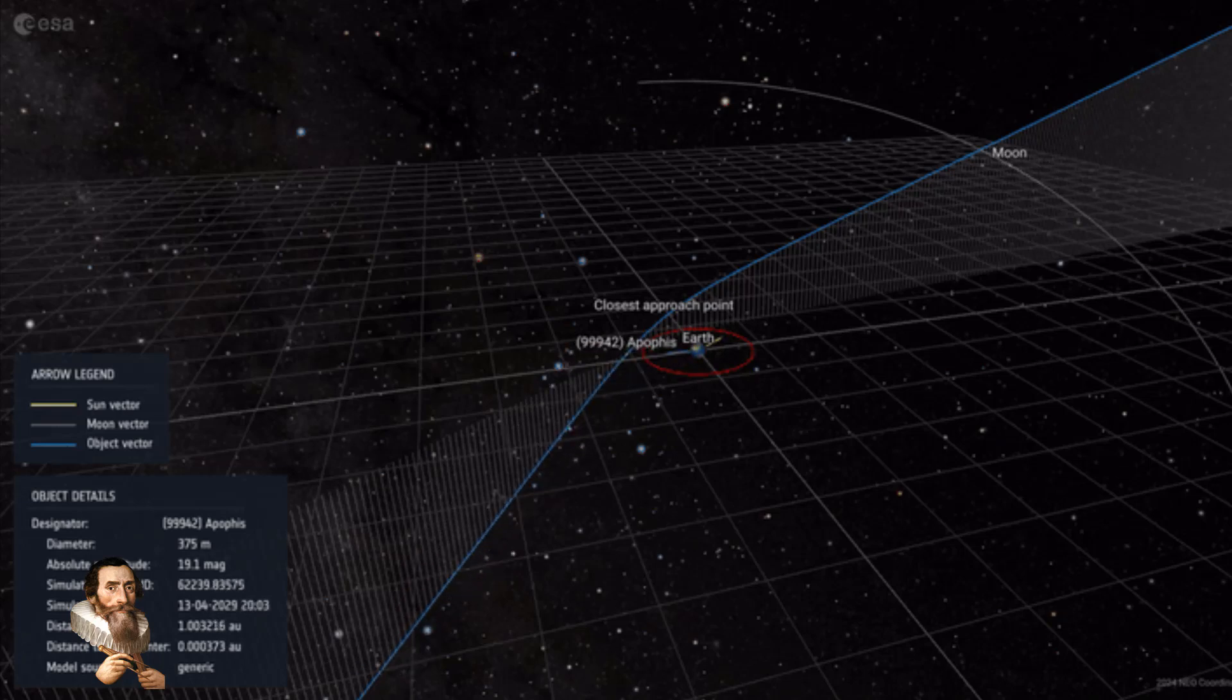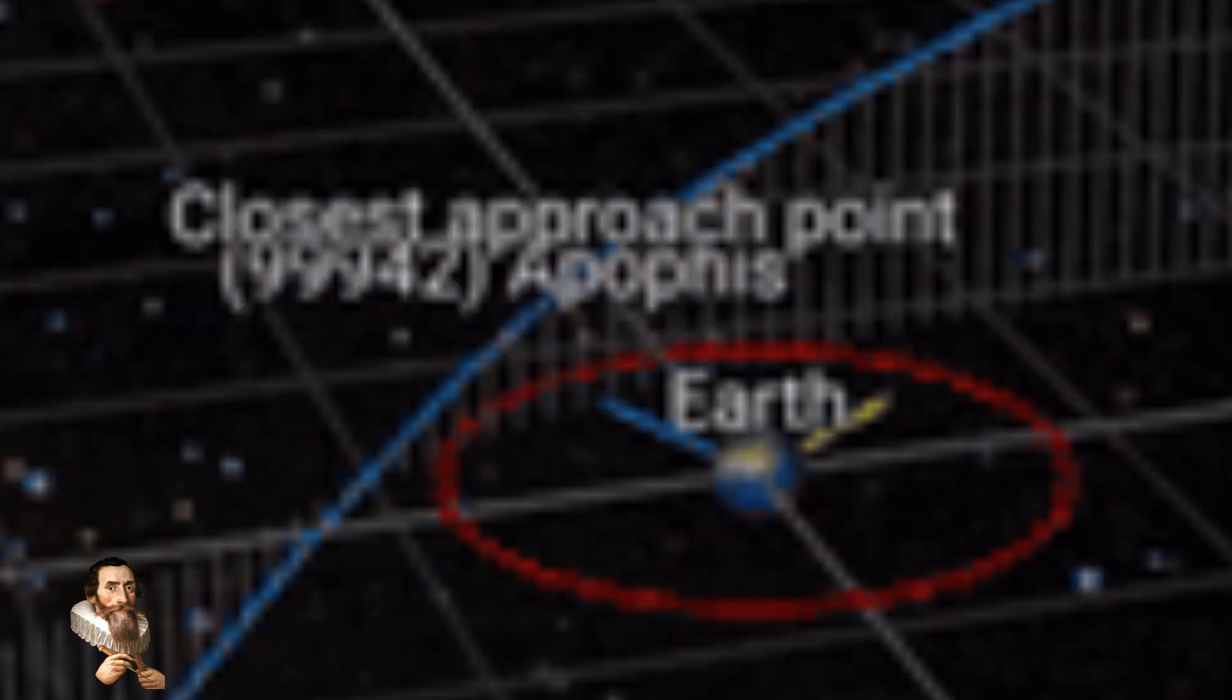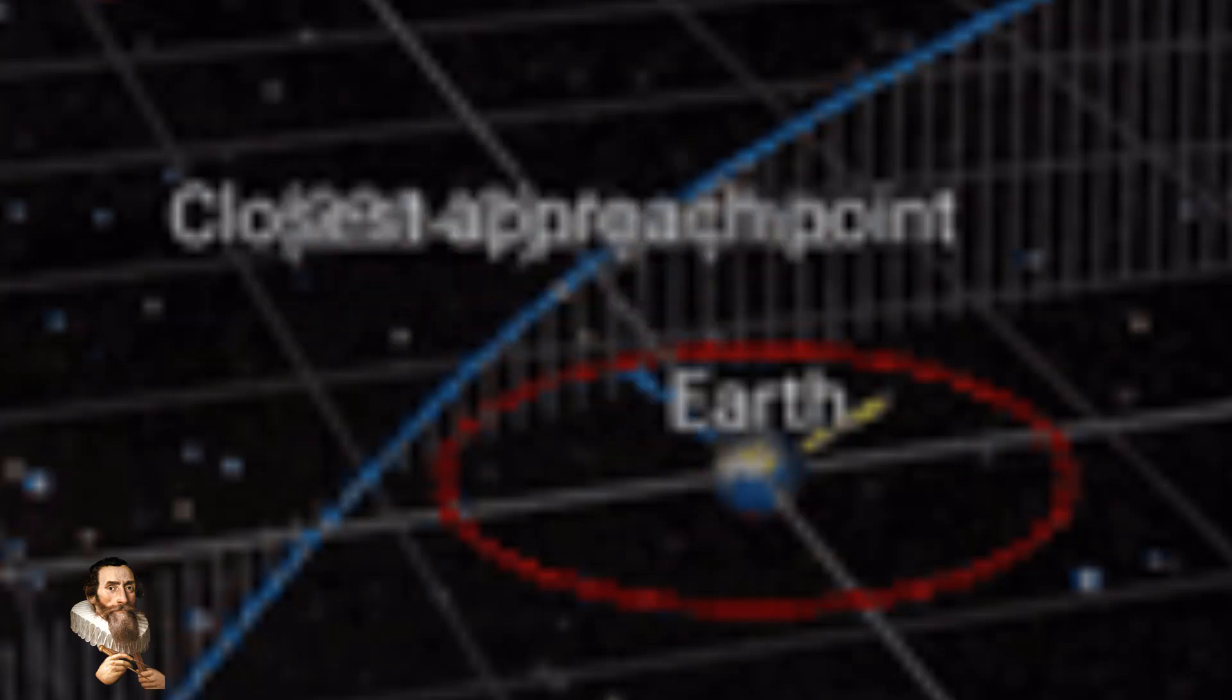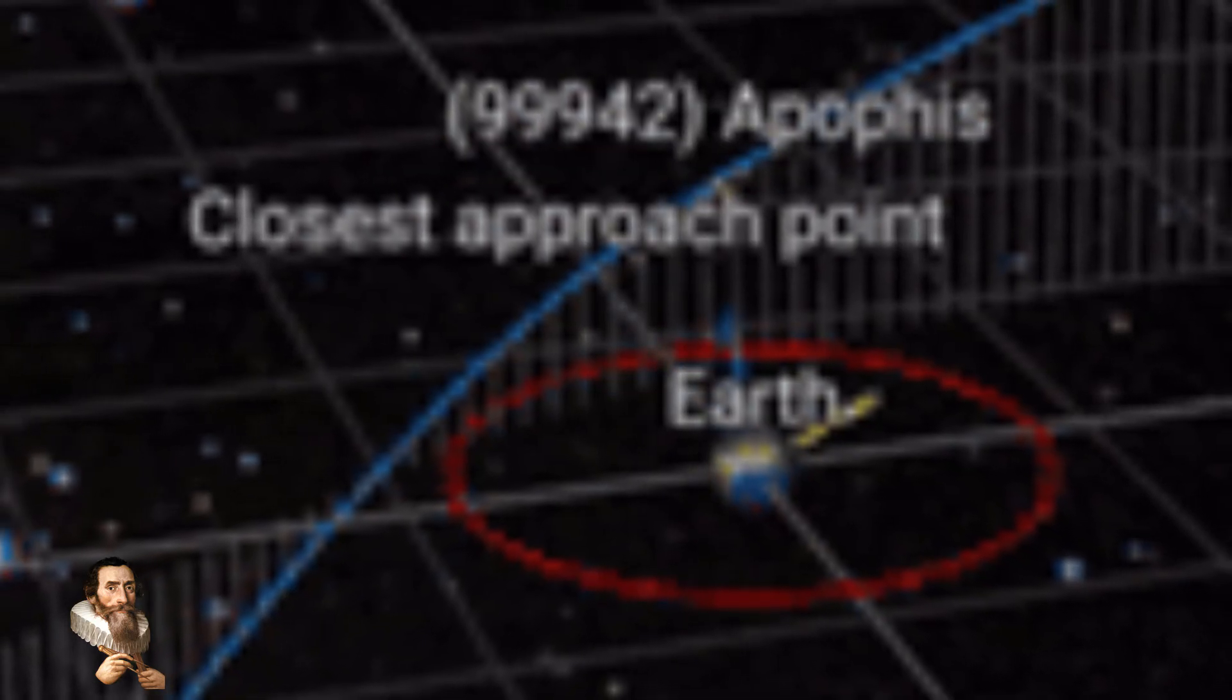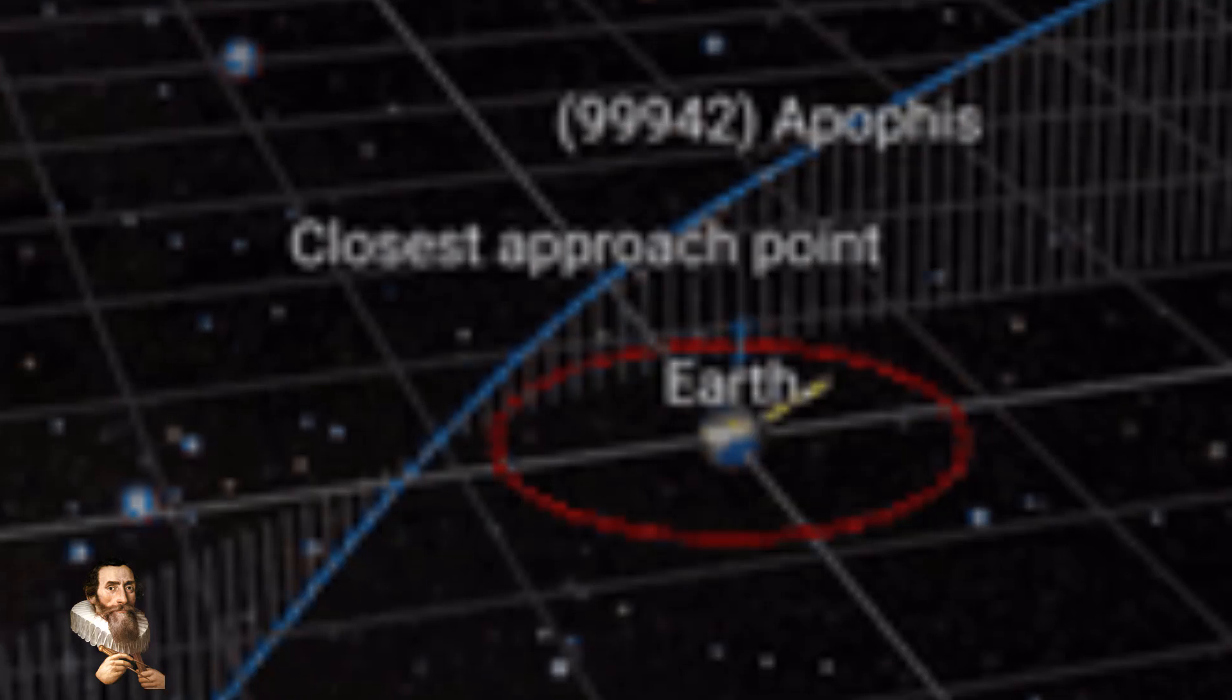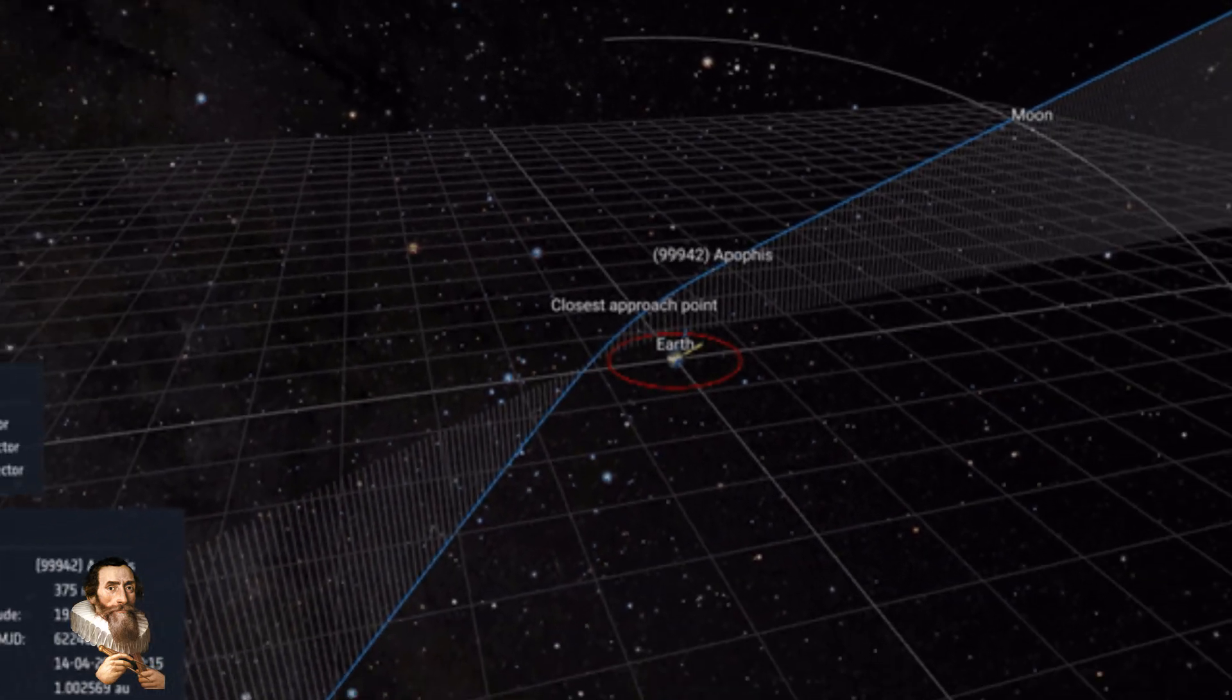Asteroid Apophis, on the other hand, will come closer than satellite's orbit, and does have the potential to impact our world on Friday, April 13th in the year 2029. And we won't know until future observations are possible in the year 2027, when we will find out if its trajectory has in fact been altered onto a collision course with our world.